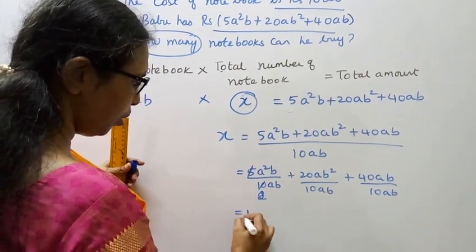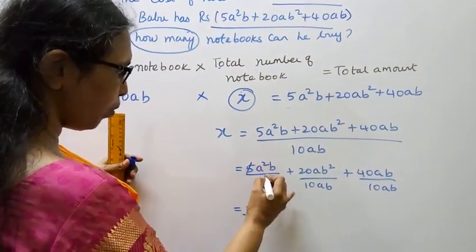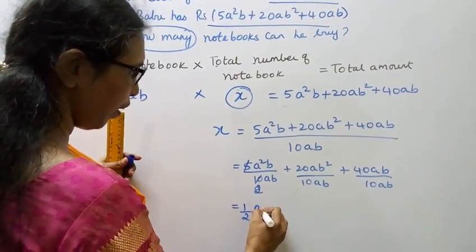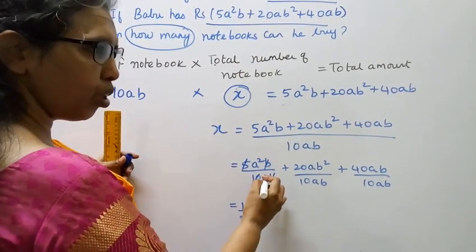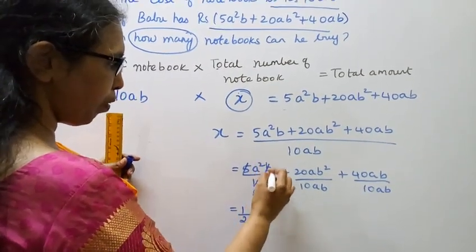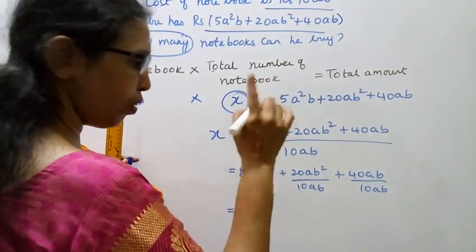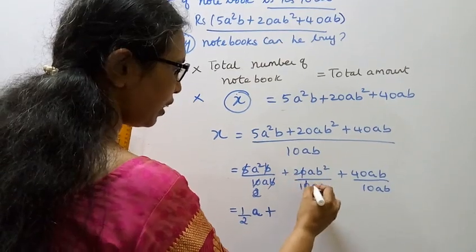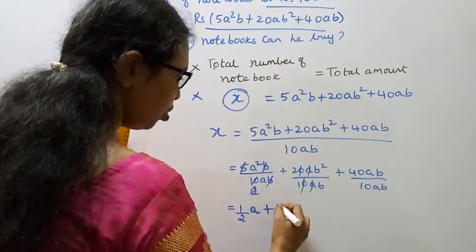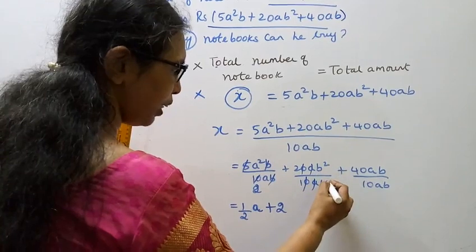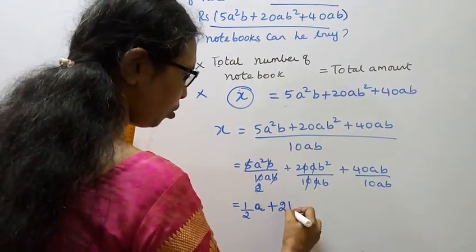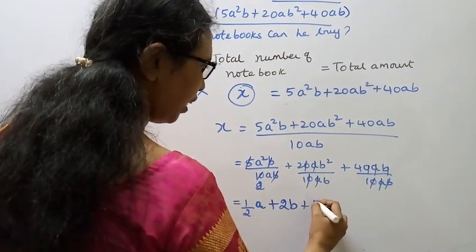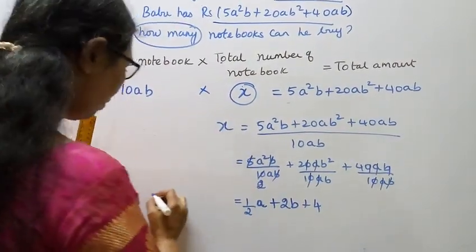5 by 10 is 1/2, a² by a is a (a² minus 1 power equals a), b by b cancels to 1. Plus 20 by 10 is 2, a cancels, b² by b is b. Plus 40 by 10 is 4, a cancels, b cancels. This gives 1/2 a plus 2b plus 4.